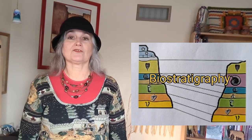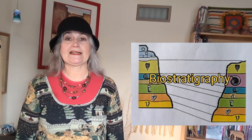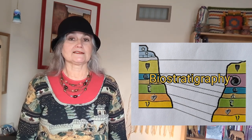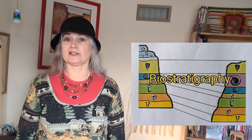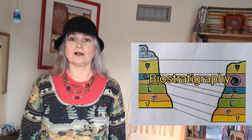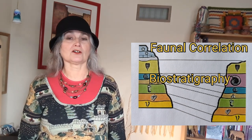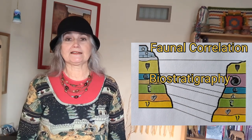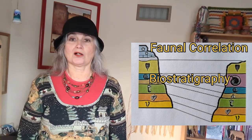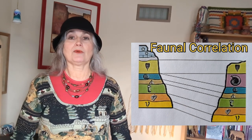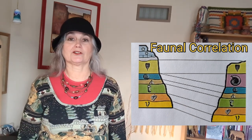Biostratigraphy, or faunal correlation, uses the fossil remains of animals to aid in dating other sites. For instance, as discussed in prior videos, potassium-argon dating is useful in East Africa because there are volcanoes and volcanic ash. The ash can be exactly dated, which helps paleoanthropologists date fossil remains and stone tools by their position between the ash layers.